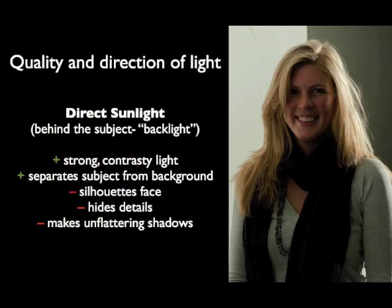Here's another way to use direct sunlight — with the light behind the subject — which photographers call backlight. On the plus side, this creates strong contrasty light and lights up Jackie's hair, putting a nice highlight on her shoulders that separates her from the dark background — creating a more three-dimensional effect. But on the minus side, the face is in silhouette because the light isn't striking the face at all; it hides all the details of the face and is not flattering at all.